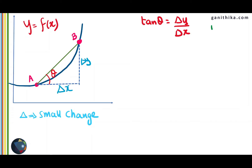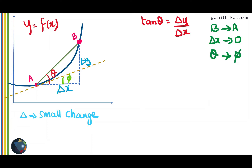Now let's say that B is going to move towards A, which means B is going to coincide with A. In that case the difference in the x-coordinates is going to become smaller and smaller and eventually it becomes zero. Also, if you look at the diagram, the chord AB becomes a tangent at A and theta becomes another angle, say phi. So phi is the angle made by the tangent at A with the x-axis. So theta becomes another angle phi as B approaches A.